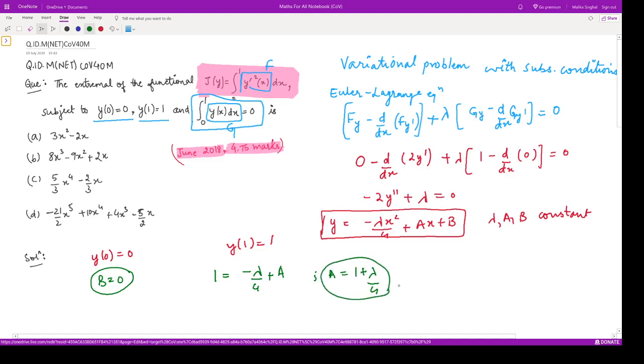Now, let us calculate what λ is. We have to make use of the third condition: the integral from 0 to 1 of y(x)dx equals 0. What is y? Substituting our y, we have the integral from 0 to 1 of [-λx²/4 + Ax]dx = 0.